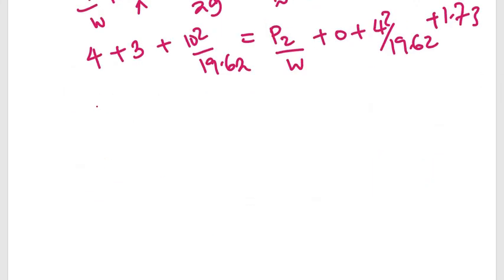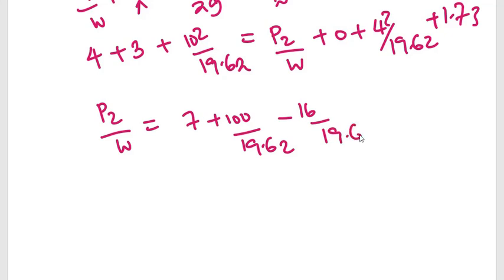Making P2/W the subject of the formula gives 7 plus 100 divided by 19.62 minus 16 divided by 19.62 minus 1.713. P2/W equals approximately 5.28.